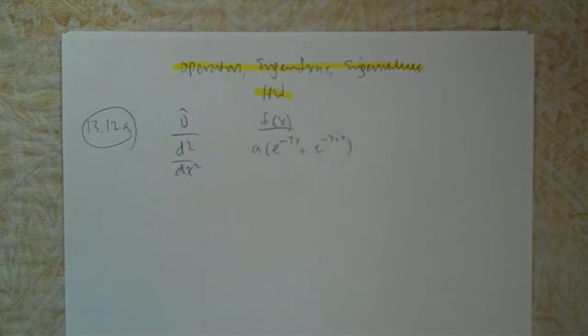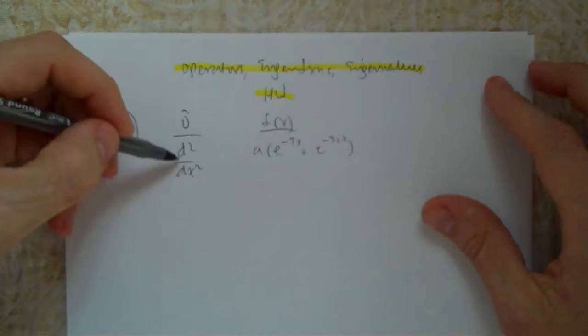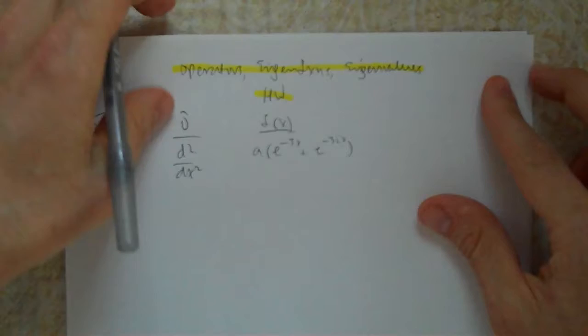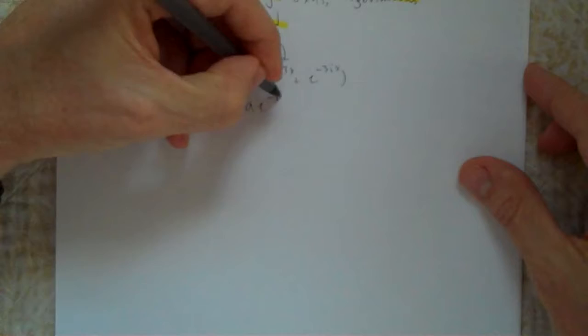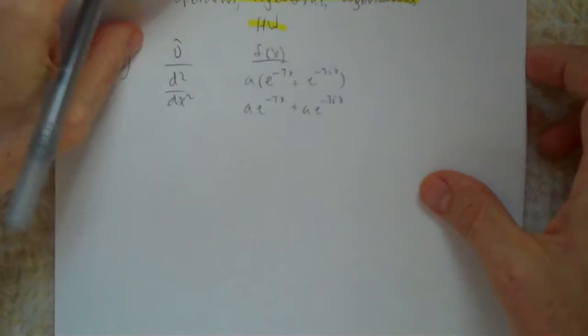Part A: remember this is a linear operator, so I can write this as A times e to the minus 3ix. That's what f is. I'm going to differentiate this twice and be done.